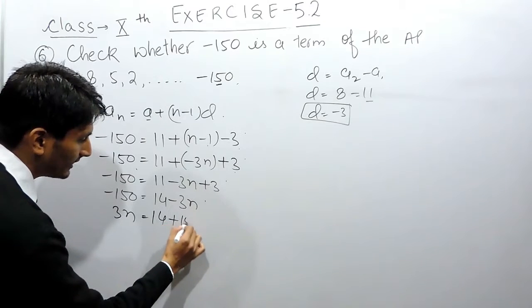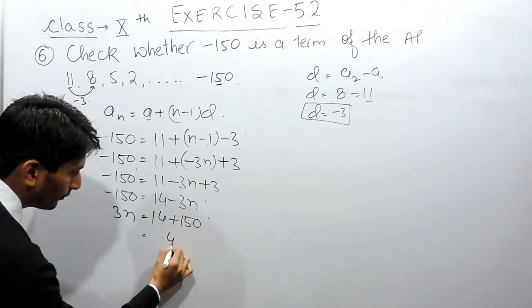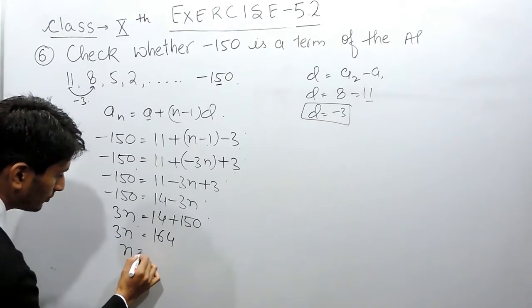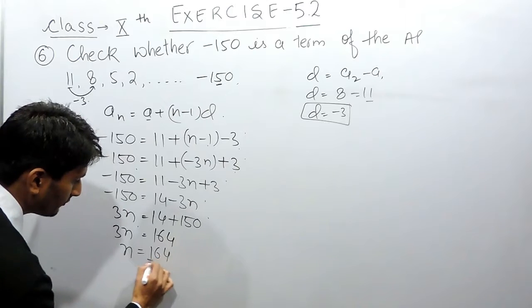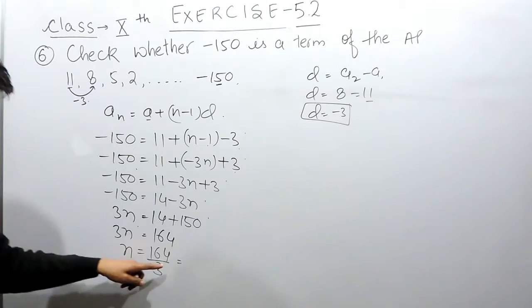And when I shift -150 to that side, this will become plus. So this will be 164, and this will be 3n. So n will be equal to 164 upon 3.